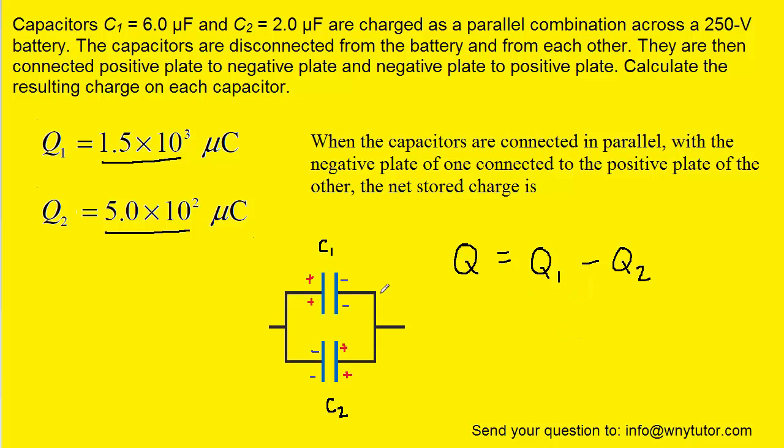But again in this case, because we're connecting positive plate directly to negative plate, we actually have to subtract the charges. So we're going to go ahead and do that in order to calculate the net charge on this system of capacitors. So when we plug in the value for Q1 and the value for Q2 and then subtract them, we can see that the net charge on this system of capacitors is 1.0 times 10^3 microcoulombs.